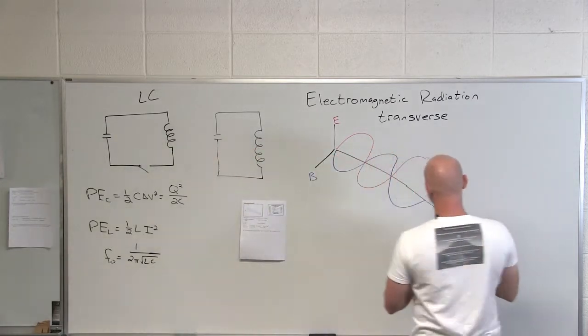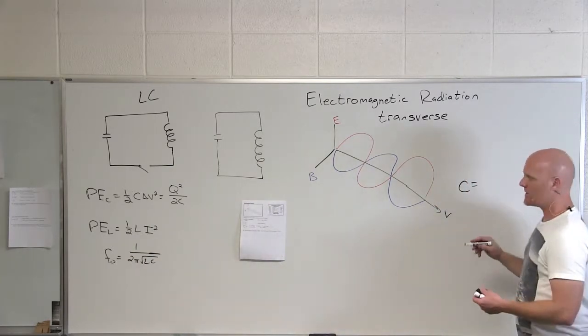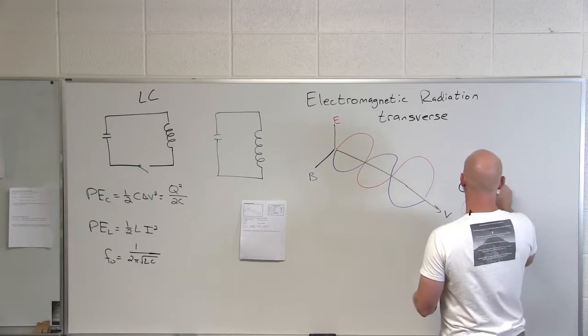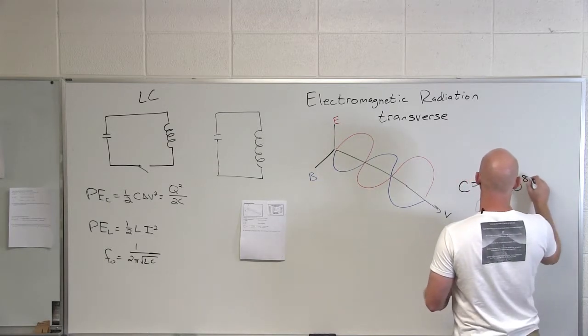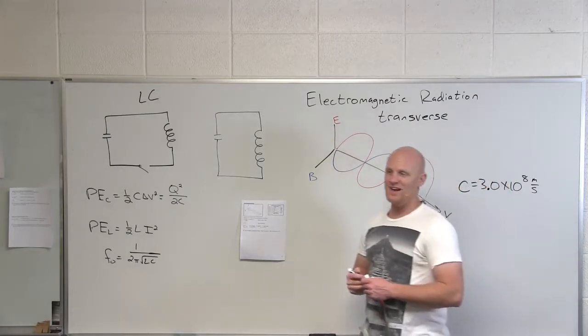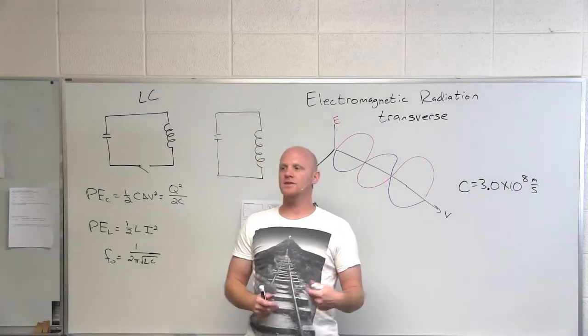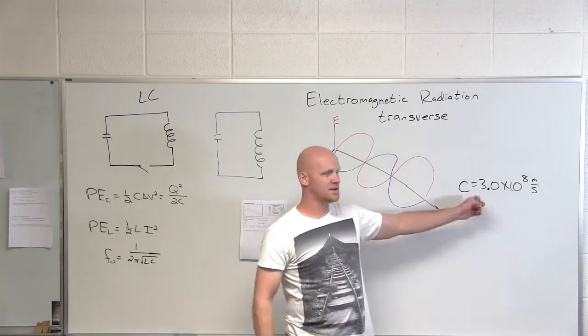The velocity for a wave, we use the symbol C to represent it. That C is 3.0 times 10 to the eighth meters per second, as long as you're in a vacuum. If you're in air, it's just a hair slower and we use the same value. But in different mediums, it might actually take on different speeds.